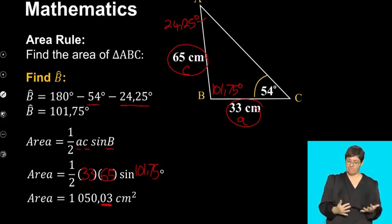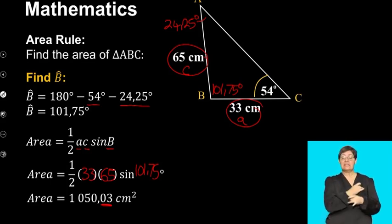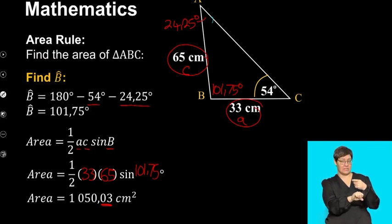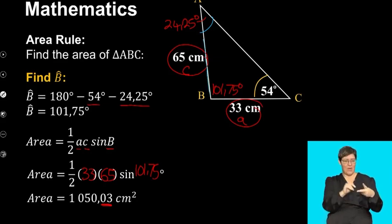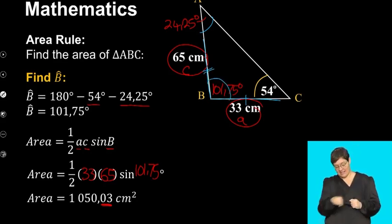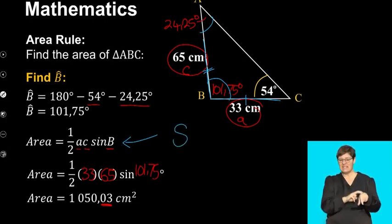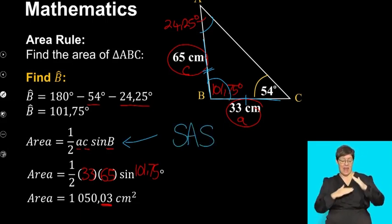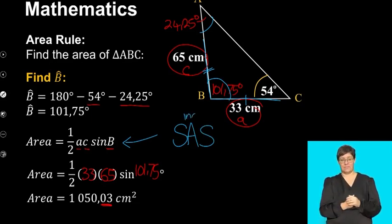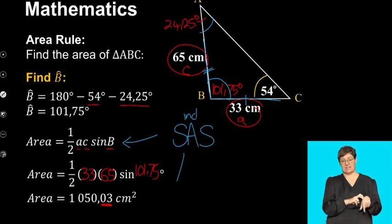That was a bit of a complicated example. Let's just recap what we did. We started off by first finding this angle using the sine rule, and once we found that angle, we used this V pattern — that side, that side, and that angle — and substituted into our area rule to find the area. Because when using the area rule, we needed to be given side, angle, side, and specifically it had to be the included angle — so we needed some kind of a V pattern.